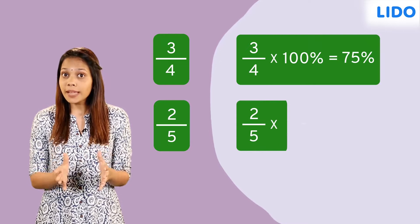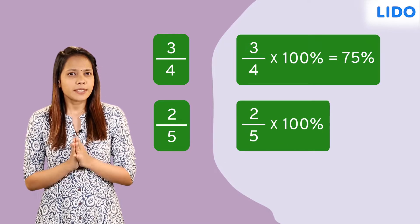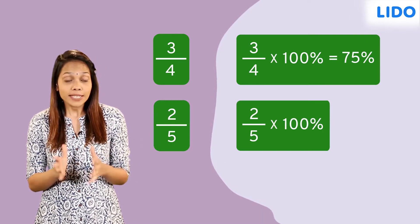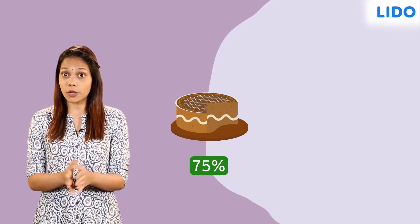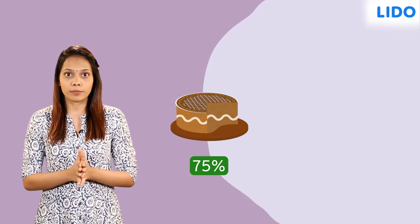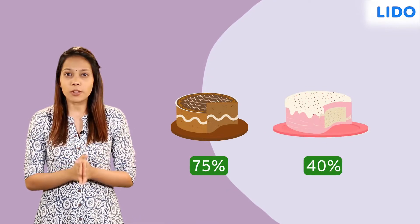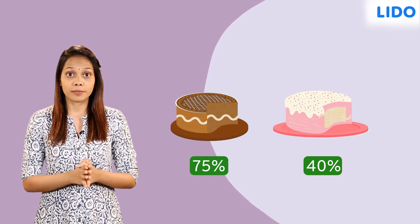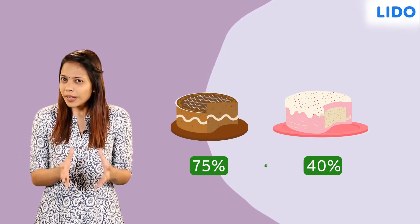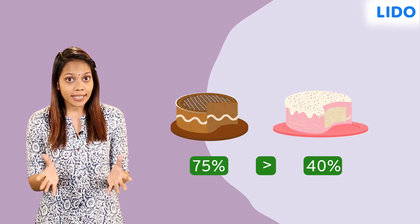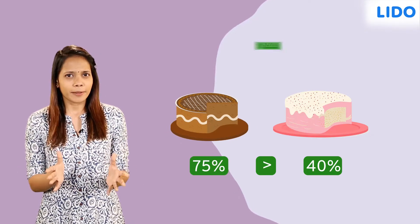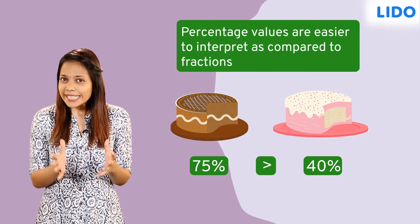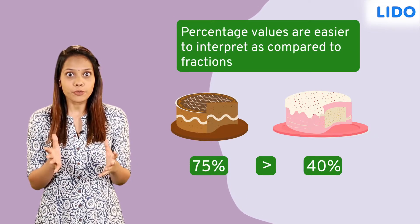Similarly, 2 over 5 multiplied by 100% gives us 2 multiplied by 20%, which equals 40%. Therefore, 75% of the chocolate cake is left over while only 40% of the vanilla cake is left over. Now, 75% is greater than 40%, hence more of the chocolate cake is left over. Clearly, percentage values are easier to interpret as compared to fractions.